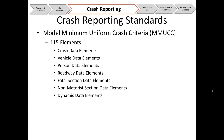The elements are broken down into different categories: crash data, vehicle level data, person data, roadway data elements, fatal section data elements, non-motorist section data elements — which covers pedestrians and bicyclists — and dynamic data elements. The dynamic data elements cover what you can think of for connected and automated vehicles and some of the assisted driving features that are out there.